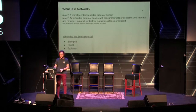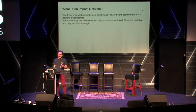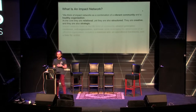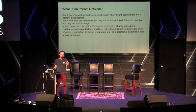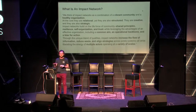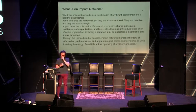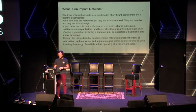Humans have also built a variety of technical networks as well. In the context of impact networks, I really like this core concept of impact networks being a mix of vibrant communities and healthy organizations. As a result, they can be relational while being structured, they can be creative while being strategic. It's about having the benefits of both healthy, vibrant communities and well-functioning organizations, with shared principles of resilience and self-organization, an operational backbone, and a bias towards action.